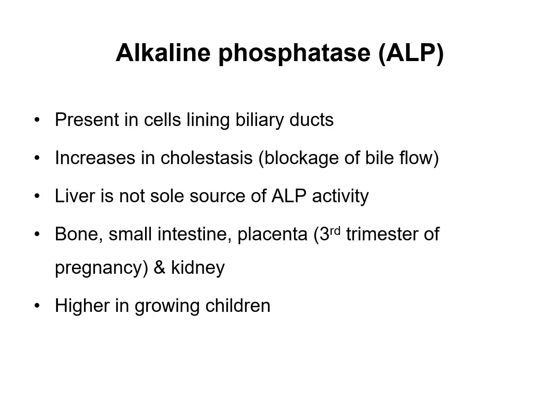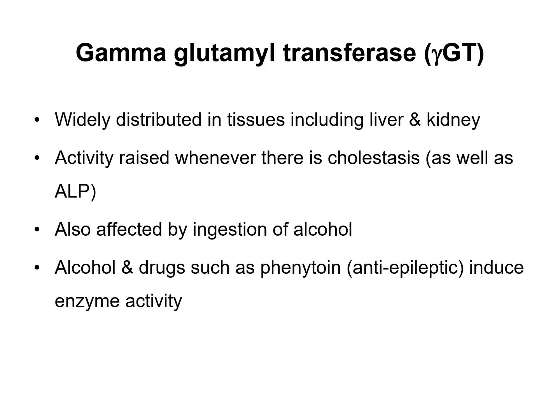Another enzyme involved in liver function tests is alkaline phosphatase (ALP), which is present in cells lining the biliary ducts and is involved in cholestasis — a blockage of bile flow. It is important to note that the liver is not the only source of ALP, as it is also present in bone, the small intestine, the placenta during the third trimester of pregnancy, and the kidney. ALP levels tend to be increased while children are growing.